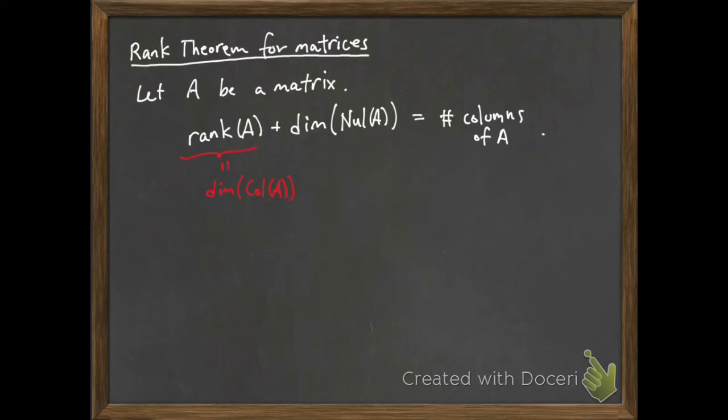So remember, the rank of A is just the dimension of the column space of A. And we saw in an earlier video that that's just the number of pivot columns of A. The dimension of the null space of A, from thinking about row reduction and how we get the solution set to the homogeneous equation Ax equals 0, the dimension just corresponds to the number of non-pivot columns of A.